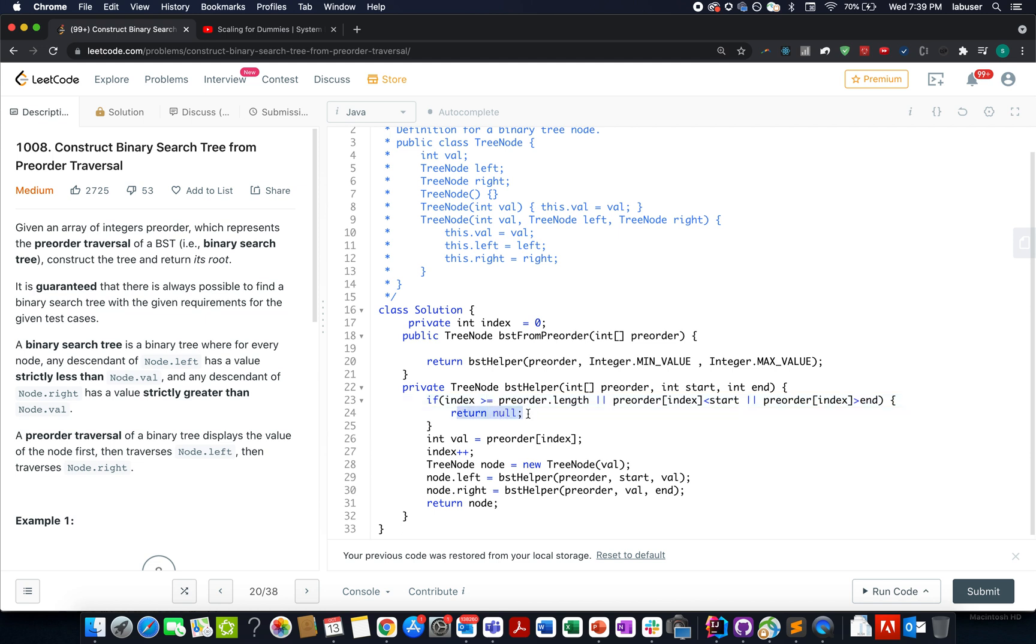If my index happens to be equal to length or is greater than length, we simply return null. This is an abortion condition. The other case is if my current element into consideration is less than the start, the lower bound, or my current element is greater than the higher bound, I update the node to null.